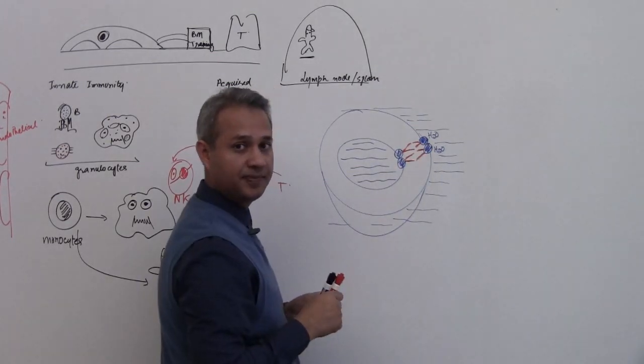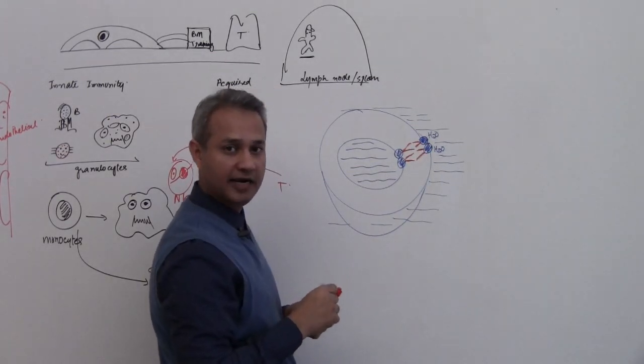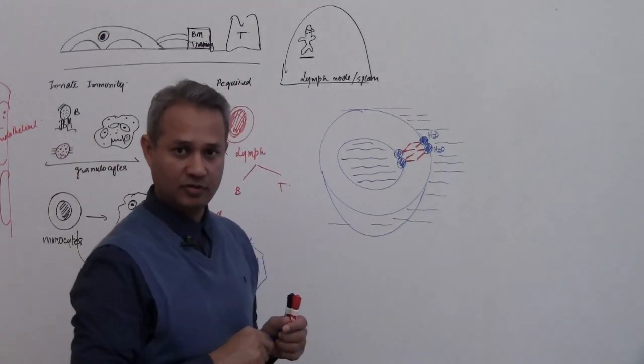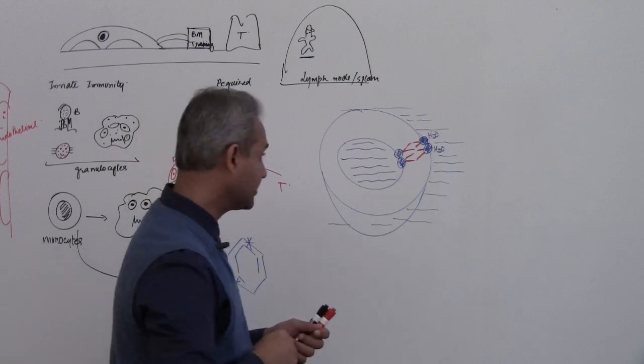This part is the water-liking part, the hydrophilic part, and this part is the water-not-liking part, the hydrophobic part. It is scared of water, it really doesn't like it.